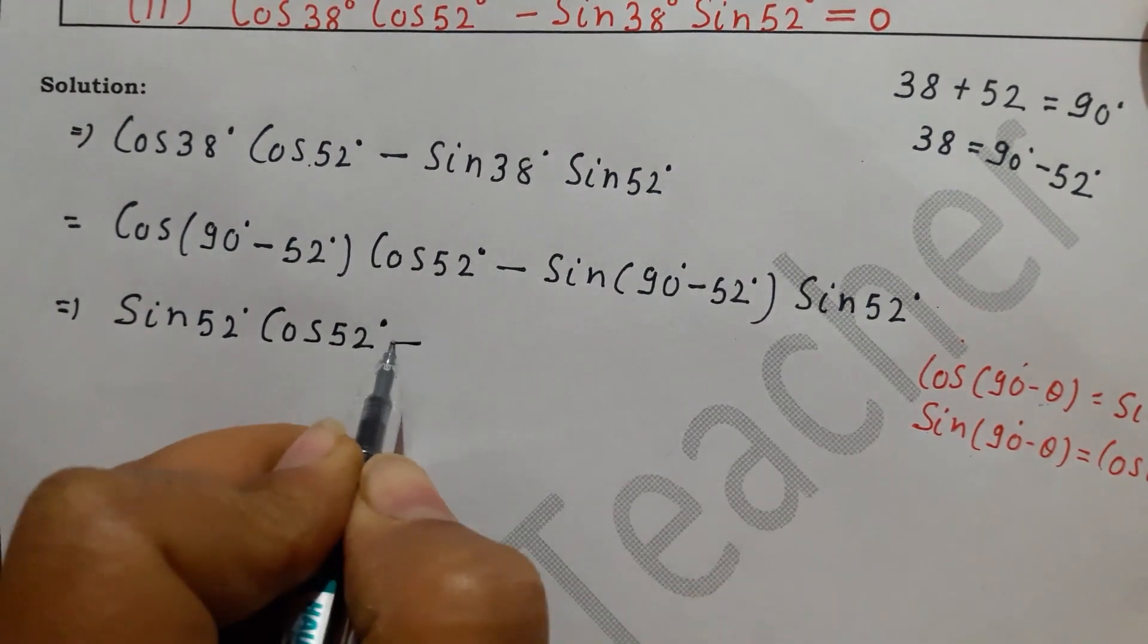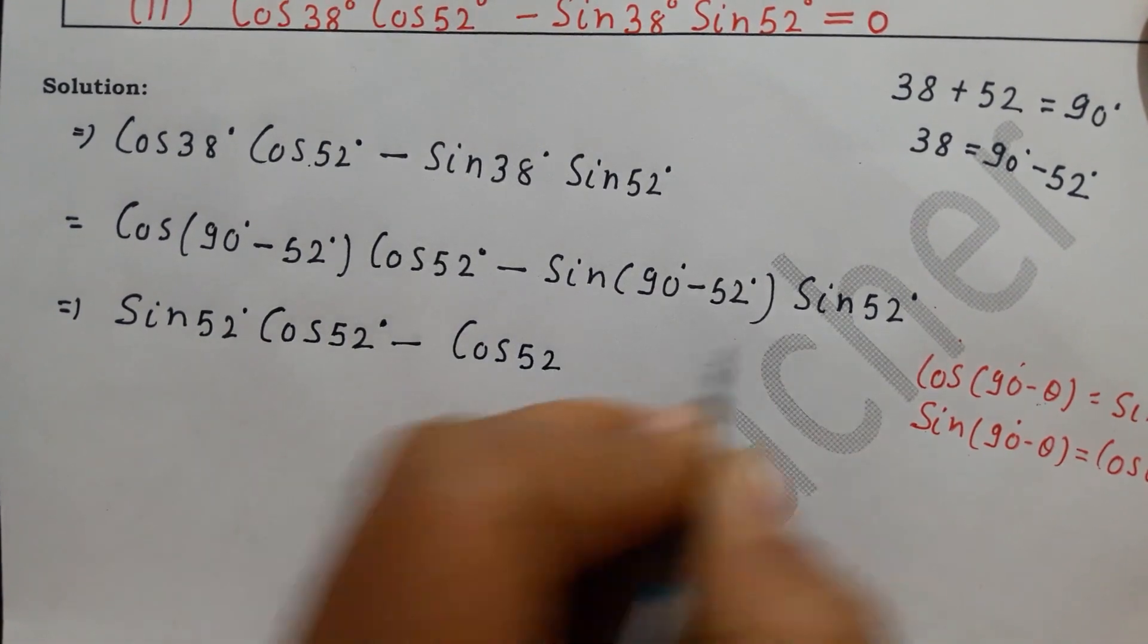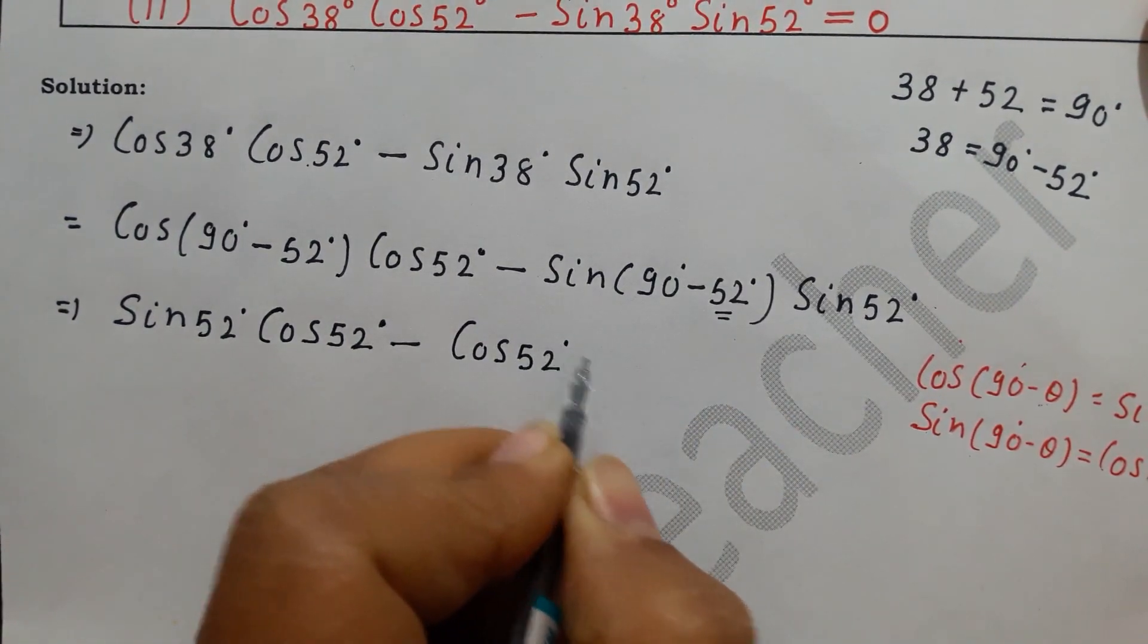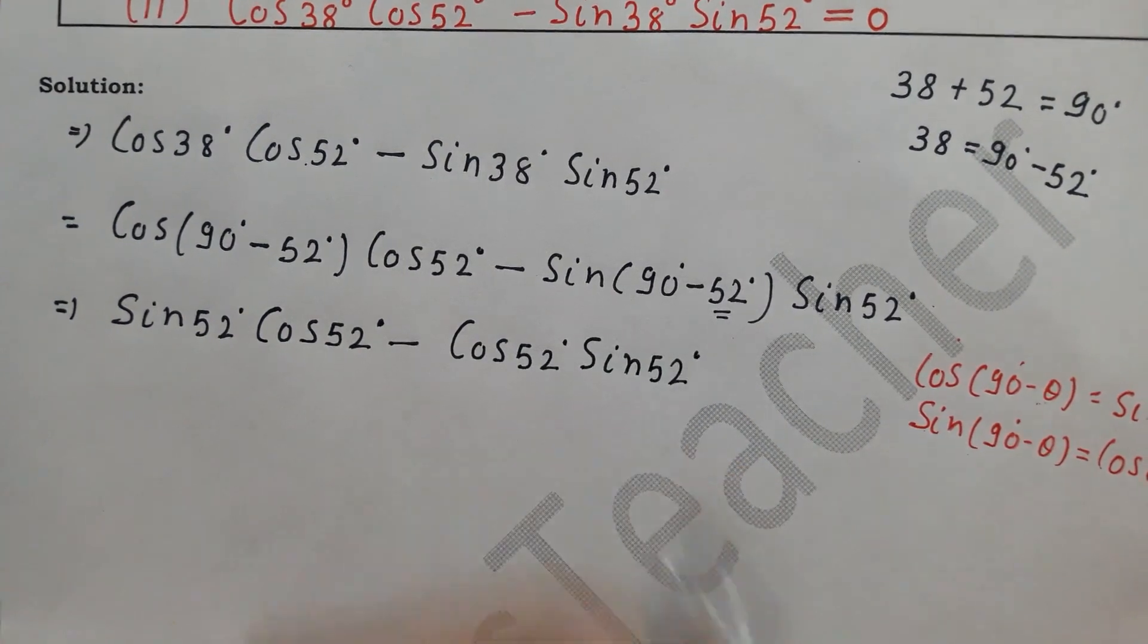Now sin(90° - θ) is how much? cos θ. This theta is 52 degrees, and this is sin 52 degrees.